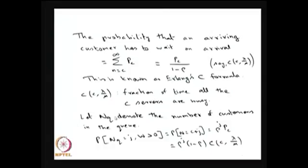Other than the steady state probability, we can get some more measures. The first one is the probability that the arriving customer has to wait. That means the number of customers in the system is greater than or equal to c, then only the customer has to wait. So you add the probabilities P_n where n is running from c to infinity. If you add all those probabilities, that is going to be P_c divided by 1 minus rho. This probability is known as the Erlang C formula for a multiserver infinite capacity model.